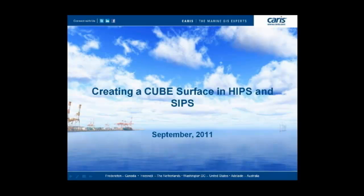In CUBE surface creation, nodes are created at the desired resolution of the surface, for example 1m or 2m, depending on the depth of the surface. Soundings are then weighted and contribute to the nodes based on their total propagated uncertainty value, or TPU, as well as their distance from the node. It is quite similar to the uncertainty method of surface creation in HIPS, however CUBE allows for multiple depth estimates to exist at a single node. Disambiguation is then used to select which hypothesis is most correct.